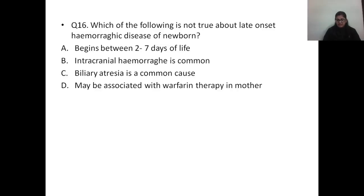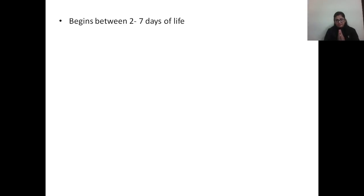Question number sixteen: which of the following is not true about late-onset hemorrhagic disease of the newborn? Options: A) begins within 2 to 7 days of life, B) intracranial hemorrhage is common, C) biliary atresia is a common cause, D) may be associated with warfarin therapy in mother. The correct answer is option A. Hemorrhagic disease of the newborn is now termed vitamin K deficiency bleeding (VKDB) and is divided into early onset, classical, and late onset.